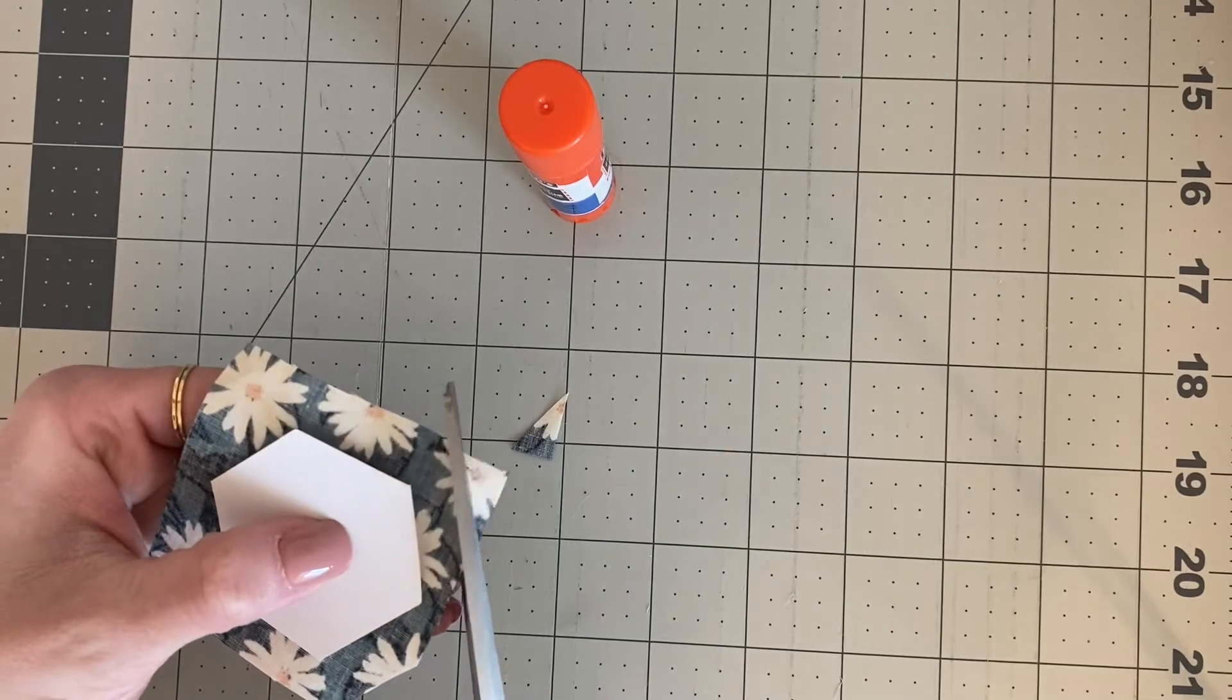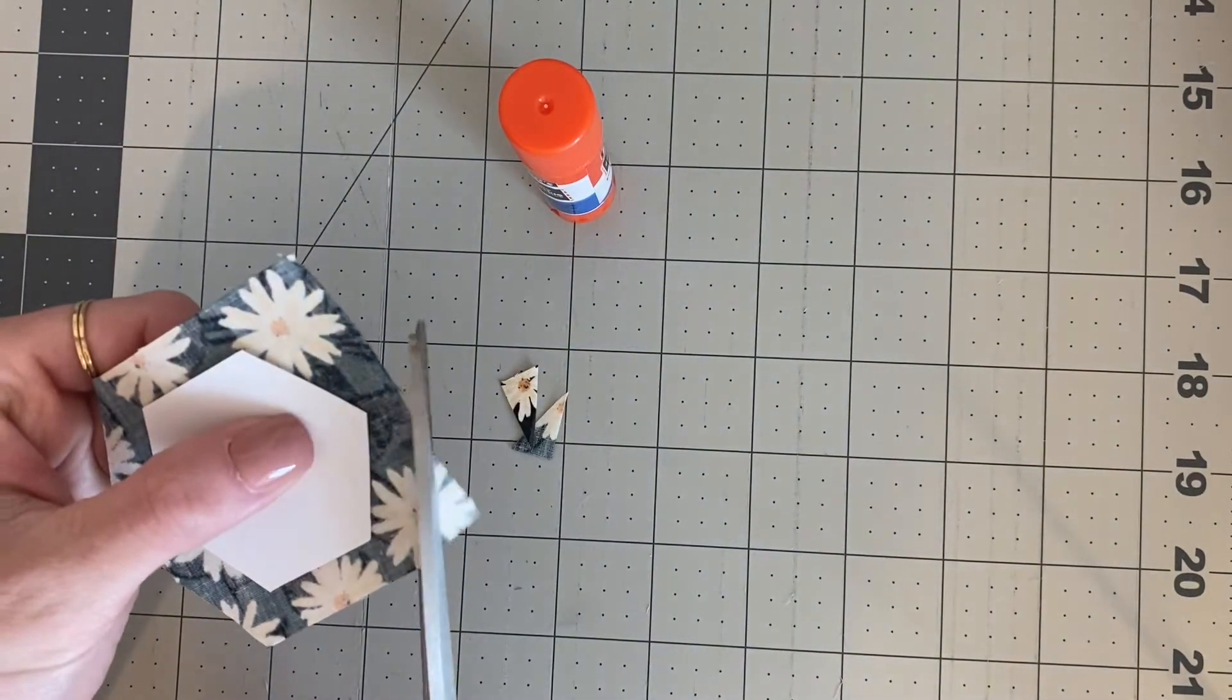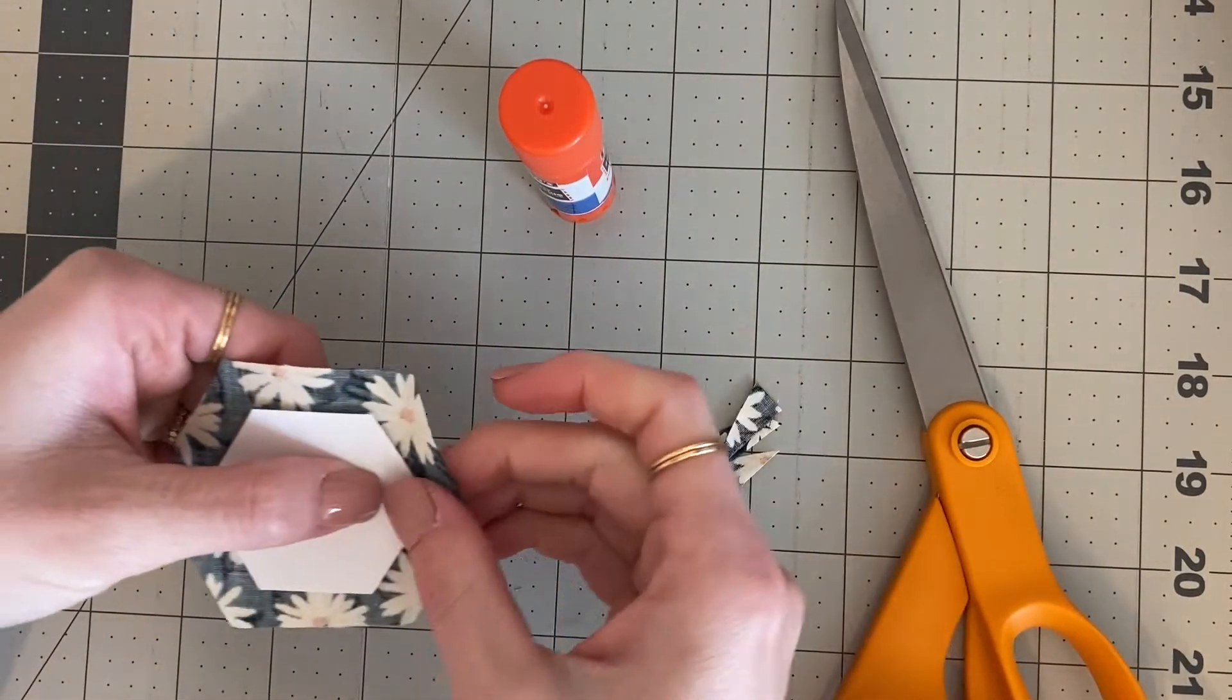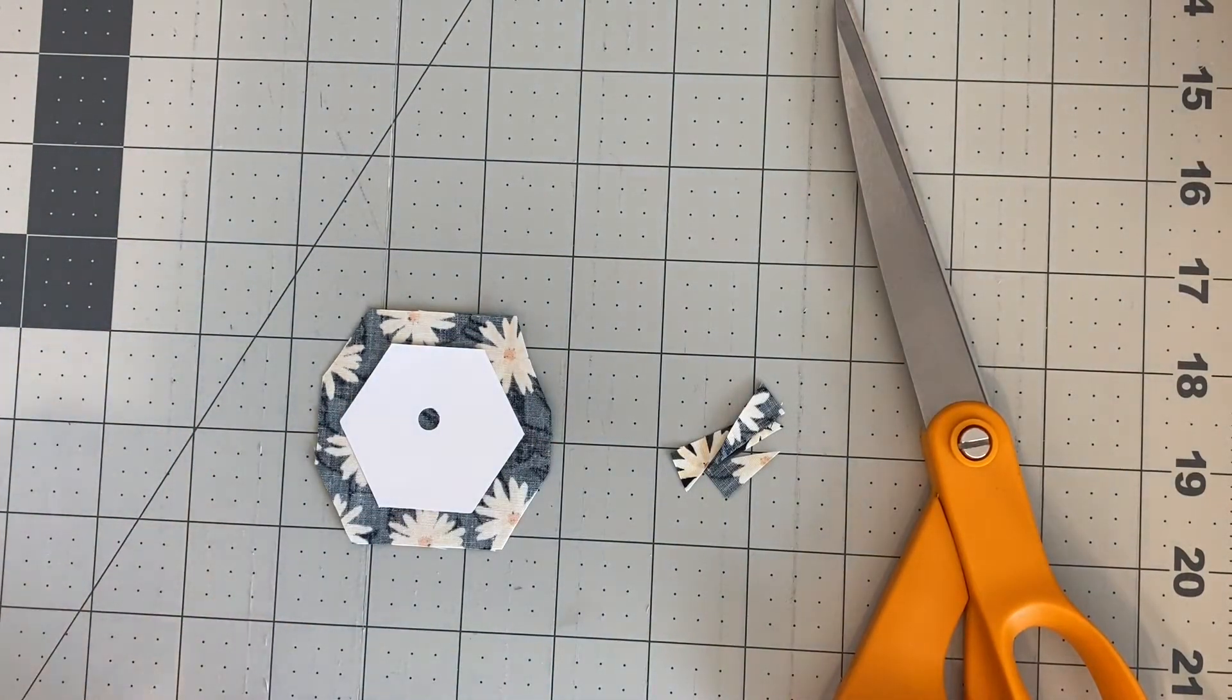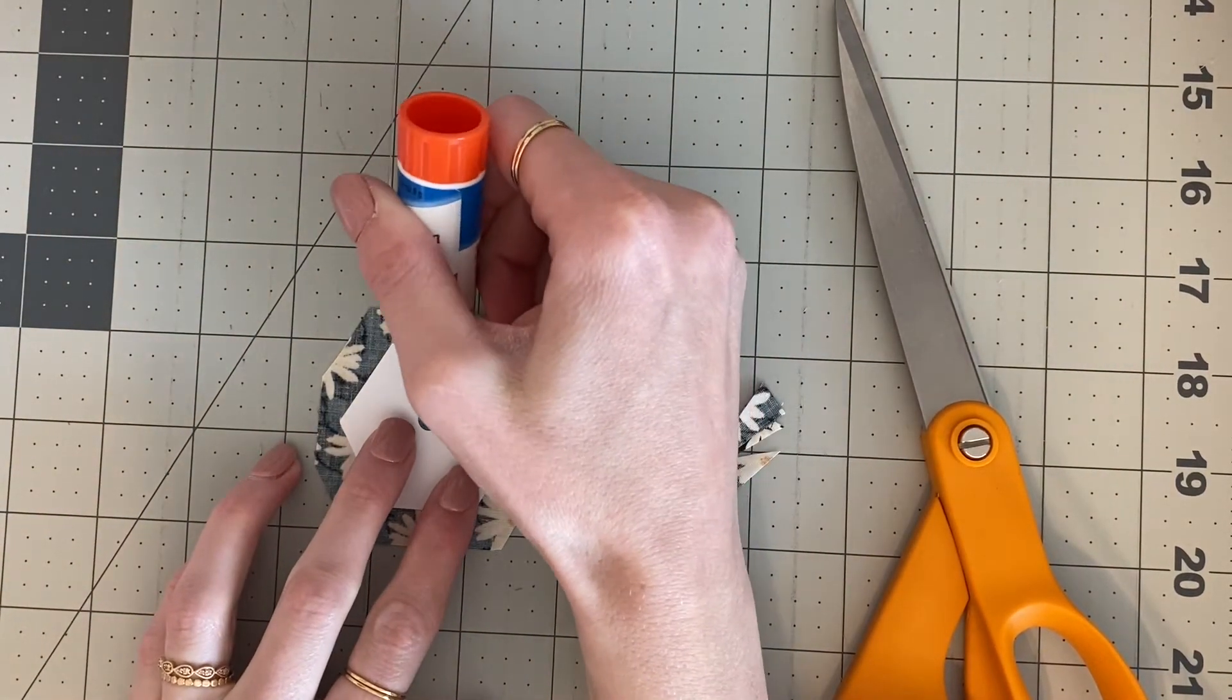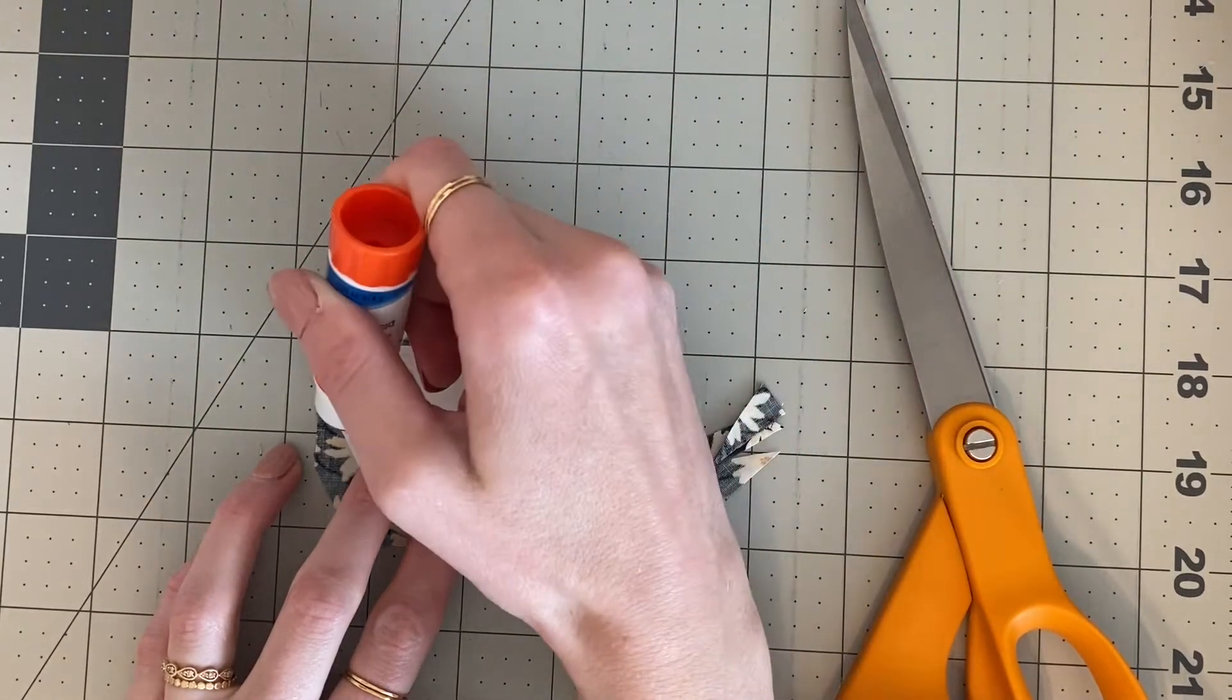All right, now that we've done that, you're going to grab your glue. And I like to start with two sides at a time, so go ahead and just put a little amount on the top right along the edge.